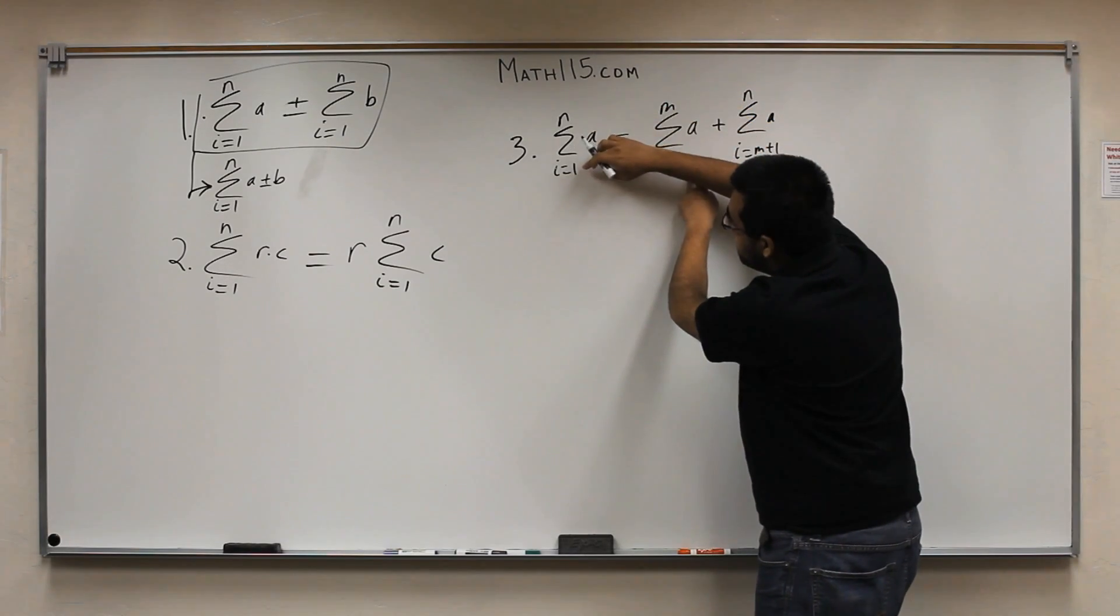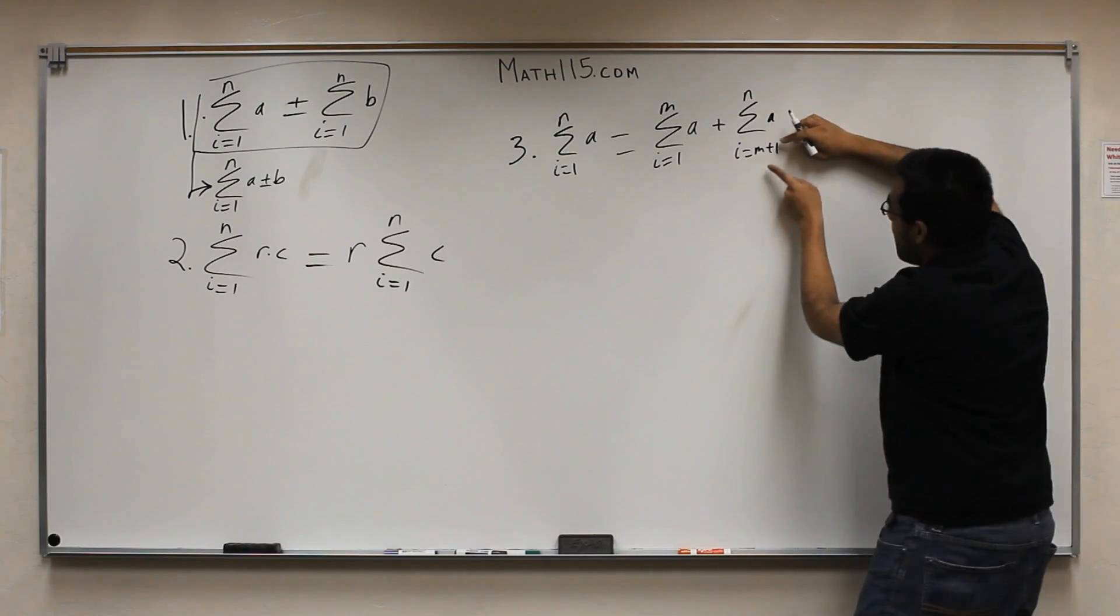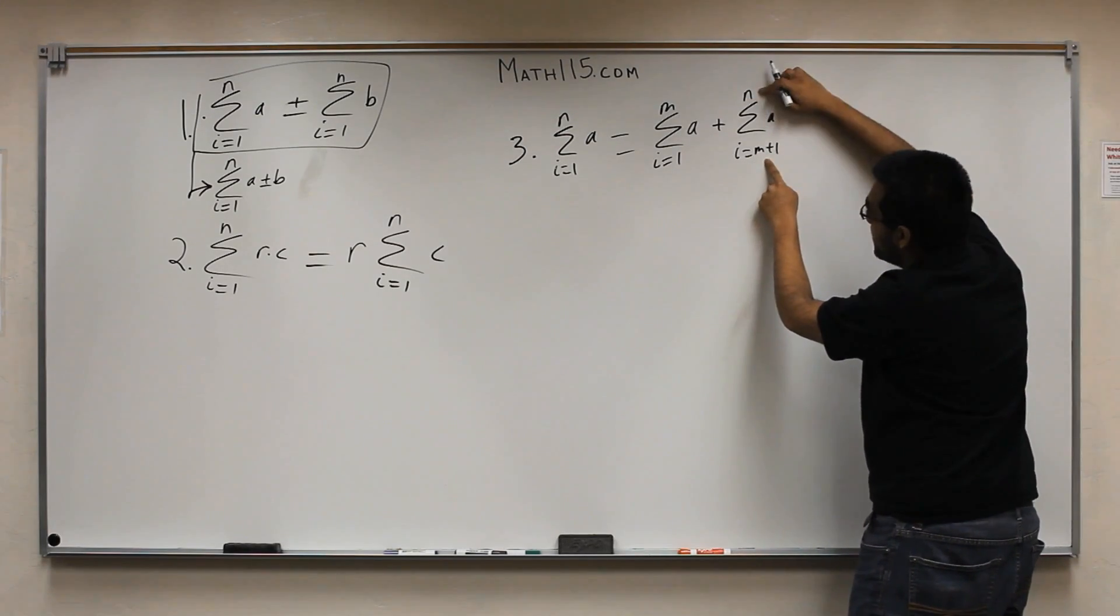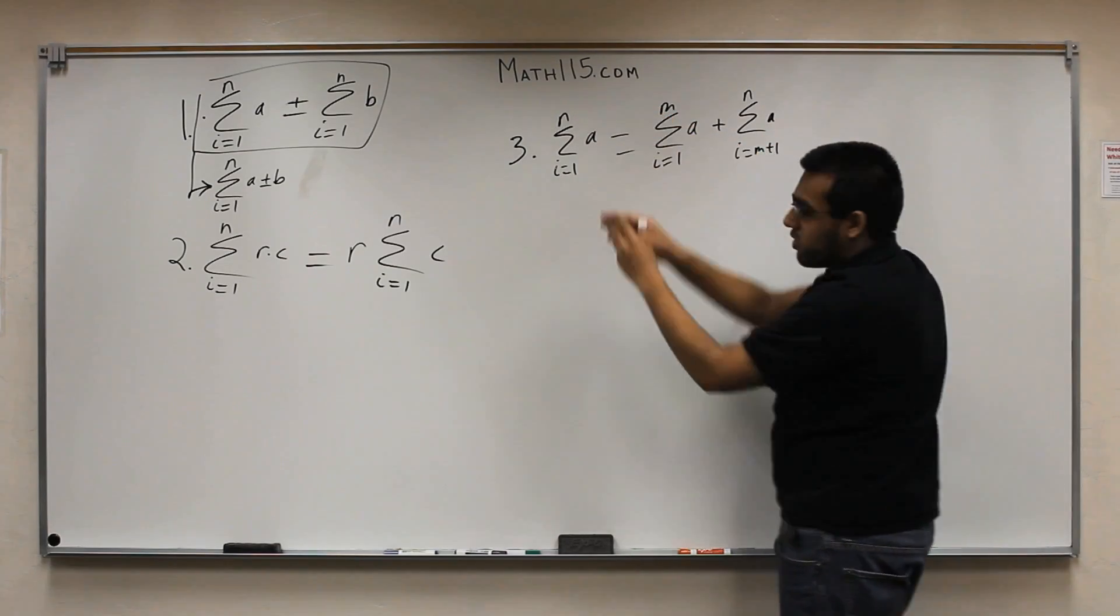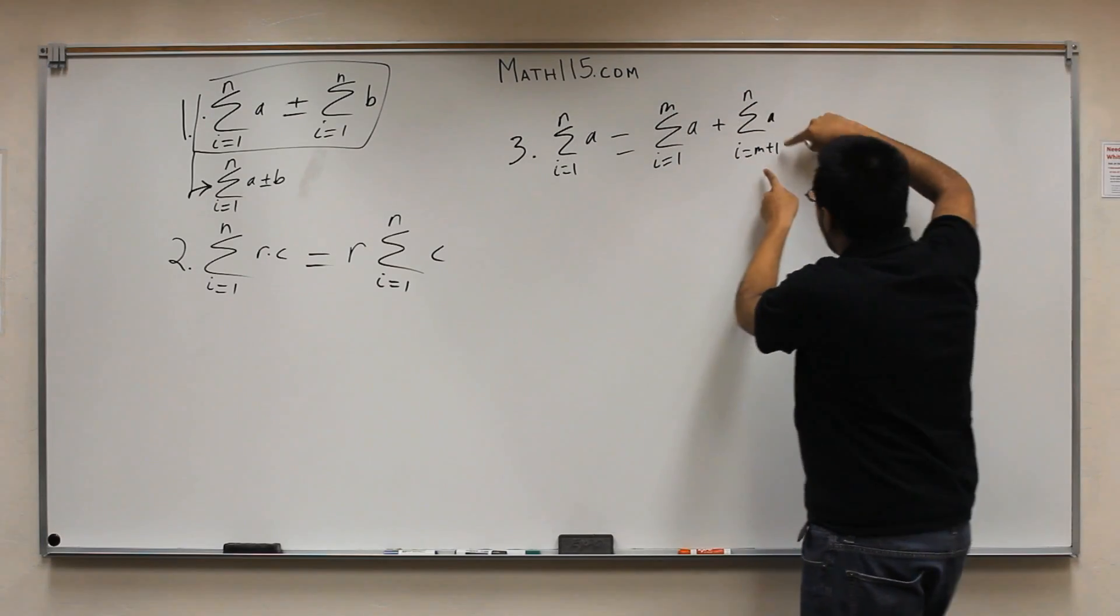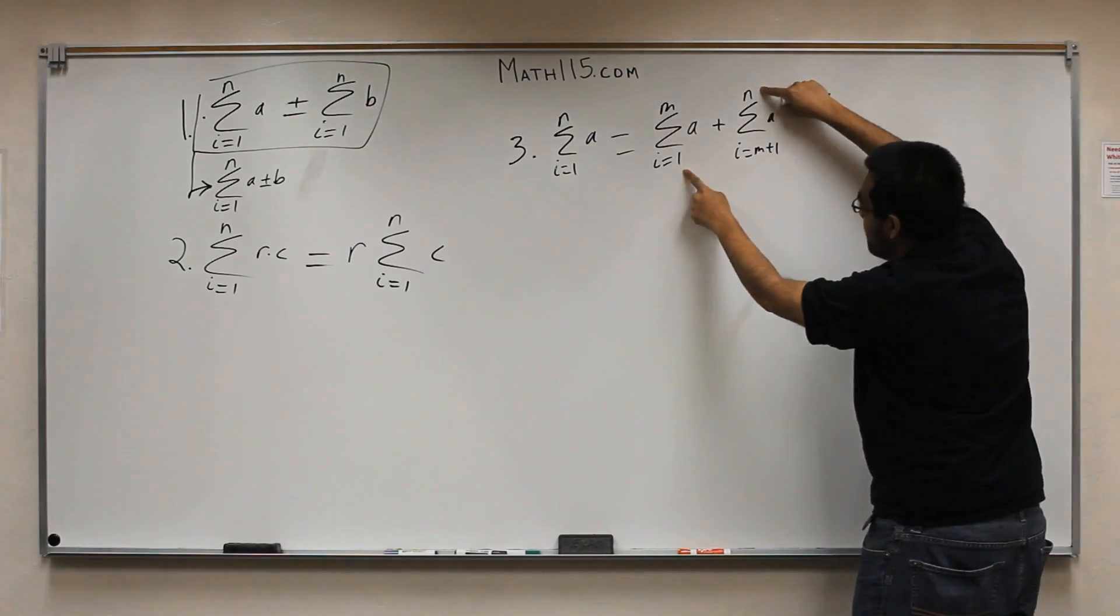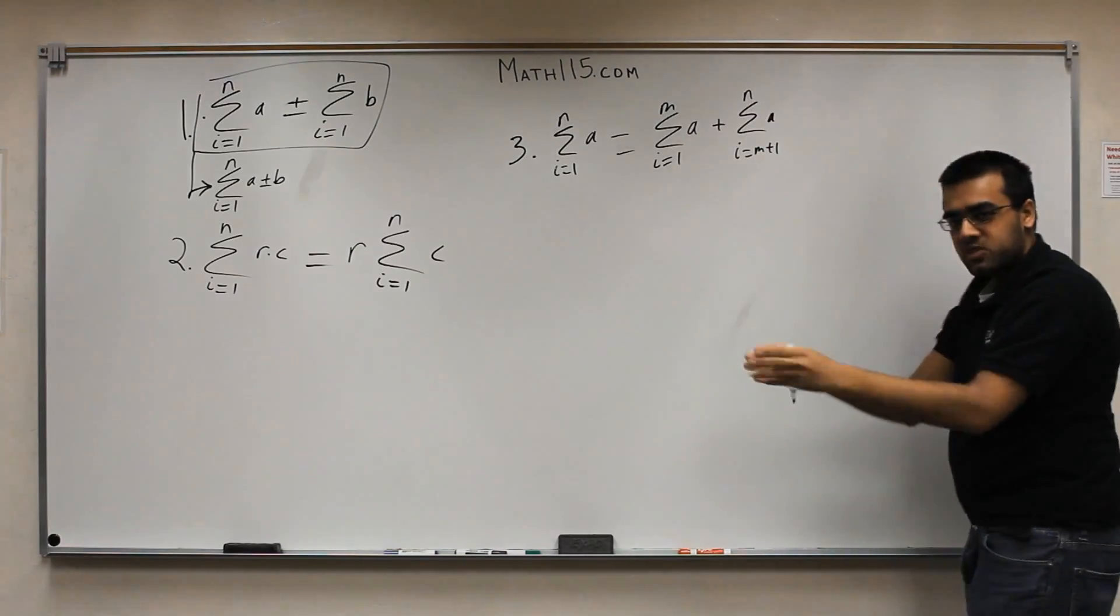So, rather than going 1 to n, what I did was I went to 1 to m, where m is some number in between 1 and n. So, 1 to m. And then I went from m plus 1, so one thing above m, all the way to n. So, basically, instead of going straight from 1 to n, I broke it up into two pathways. Went from 1 to m, and then m plus 1 to n, to get to the n.